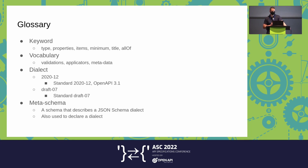A vocabulary is a collection of keywords — some grouping. In JSON Schema we have several: one is validation, so all the keywords specifically for validation such as minimum go in that vocabulary. Applicators are things that have sub-schemas — the properties keyword has schemas within it. Those are applicators. And there are several other vocabularies. So again, a vocabulary is a collection of keywords, and similarly, a dialect is a collection of vocabularies.